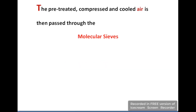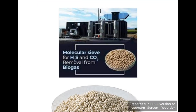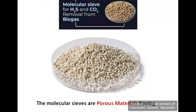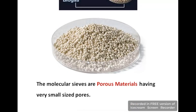After pre-treatment and compression, the cooled air is further processed with the help of molecular sieves. Here you can see the molecular sieves which are used for H₂S gas and CO₂ gas.